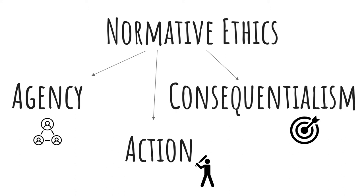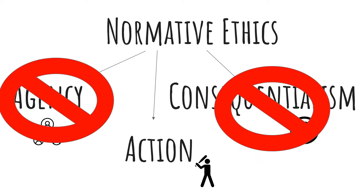Sometimes you can divide ethics just into consequentialism and non-consequentialism. Non-consequentialism would include all theories that are agency- and action-based, while consequentialism covers everything that falls under that category. Today we are focusing on action-based ethics — not agency-based ethics and not consequentialism.